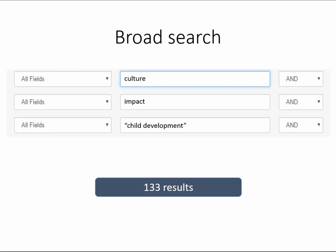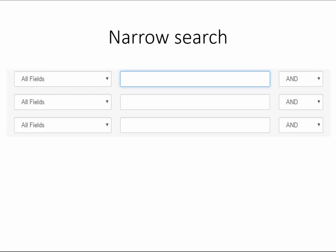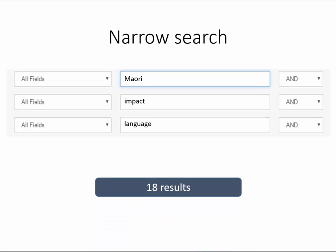We also want to find some New Zealand specific material. By using different keywords to narrow this search, we can try to find material that is more specific to the topic. This search found 18 items.